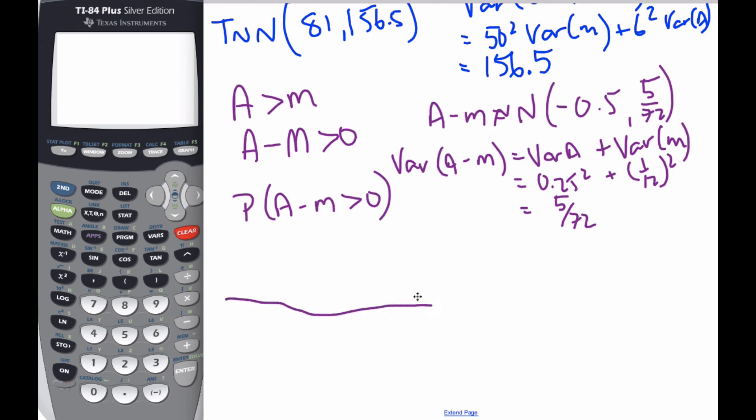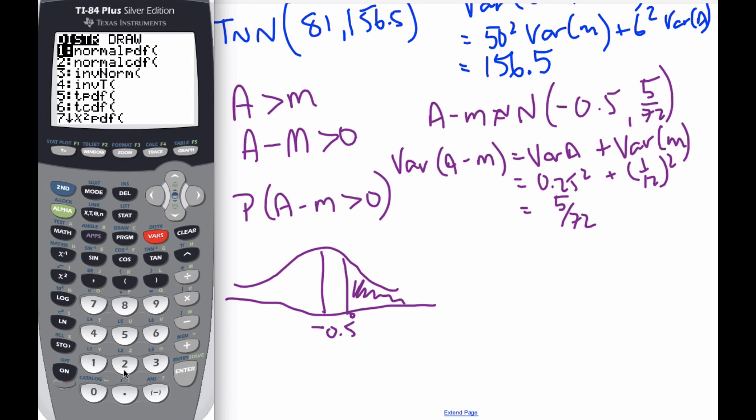Well, if I think about my normal curve, this is negative 0.5. Here's 0. I'm looking for this area here. So I go to my calculator. I go second distributions, normal CDF.